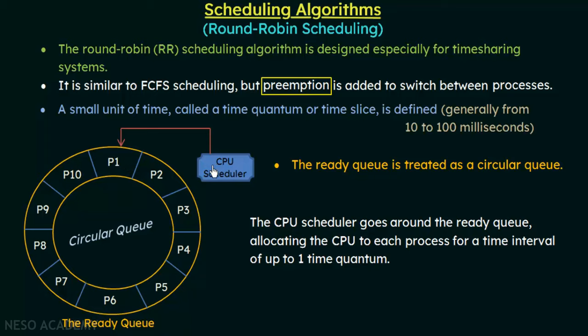After P1's quantum, the scheduler gives the CPU to P2, which executes for 5 milliseconds, then P3 gets the CPU for 5 milliseconds, and so on. When the scheduler reaches the end of the queue, it comes back to check if P1 has completed its execution. If P1 has completed, it does not need the CPU again. But if P1 did not complete in its first time quantum, the CPU is given to P1 again and it executes for another 5 milliseconds.